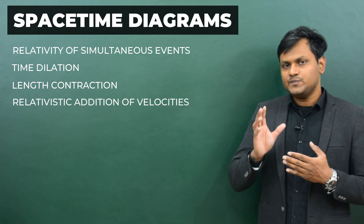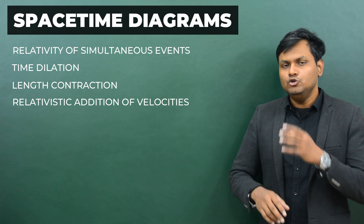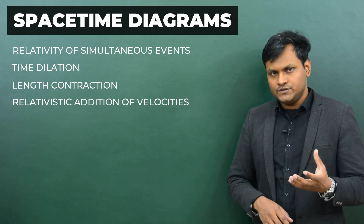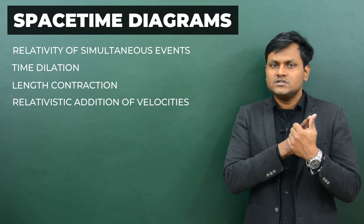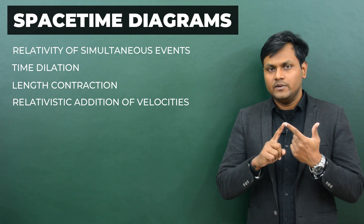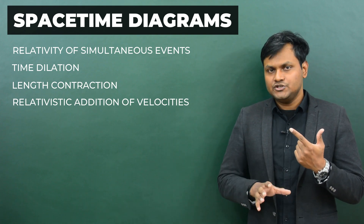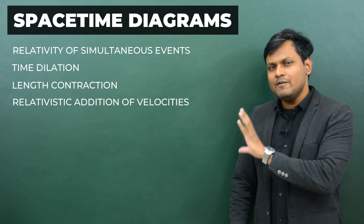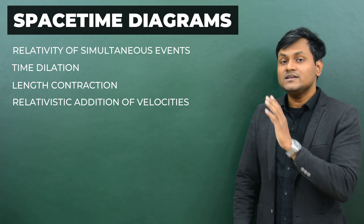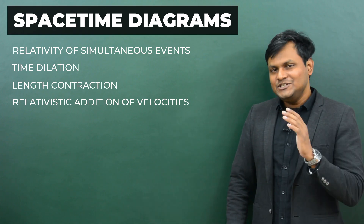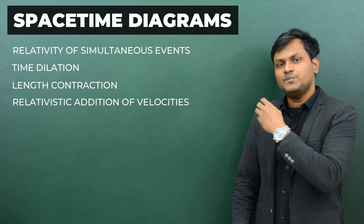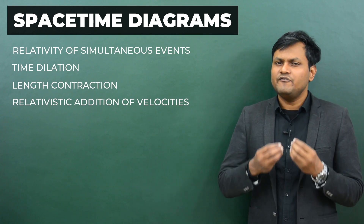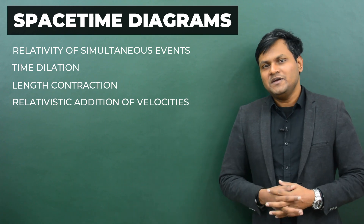If you are familiar with special theory of relativity, you may have heard of these consequences and you may have also seen their proofs using either Lorentz transformation equations or some sort of a thought experiment. What I'm going to do here today is provide an alternate approach of demonstrating the same phenomena but using space-time diagrams, in a very simple, straightforward and elegant manner.